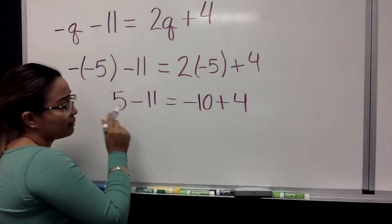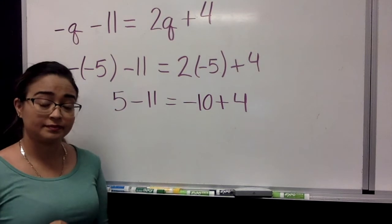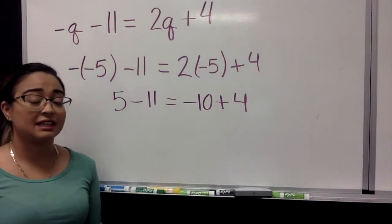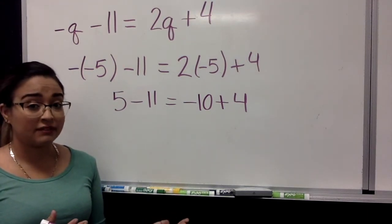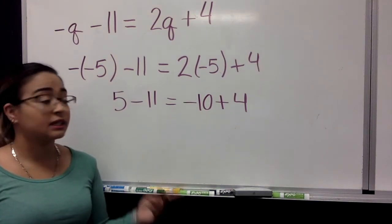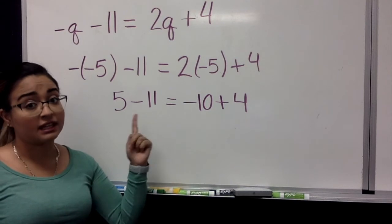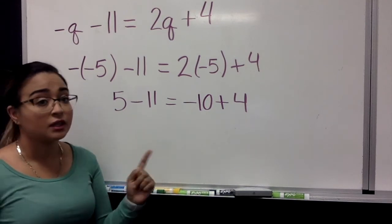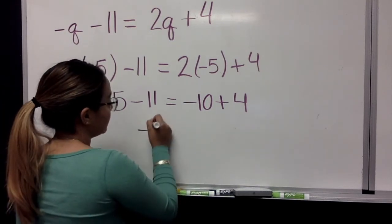What is 5 minus 11? We have a positive and a negative. We're going to subtract 5 from 11. That's going to leave us with 6. But our 6 is going to be negative because the negative is in front of the 11 and the 11 is a bigger number. So we are left with negative 6.